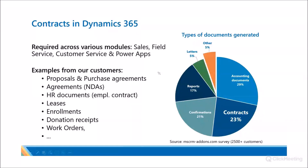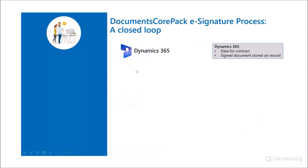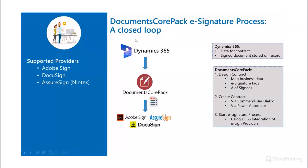I want to cover the Documents CorePAC e-signing process to show you what we do if you're not familiar with it. The main thing is we have data for a contract inside of Dynamics 365, and the goal is that you always want to have that signed document stored on the record. There are three steps here. The first part is the contract design, and that's all done in the template designer.